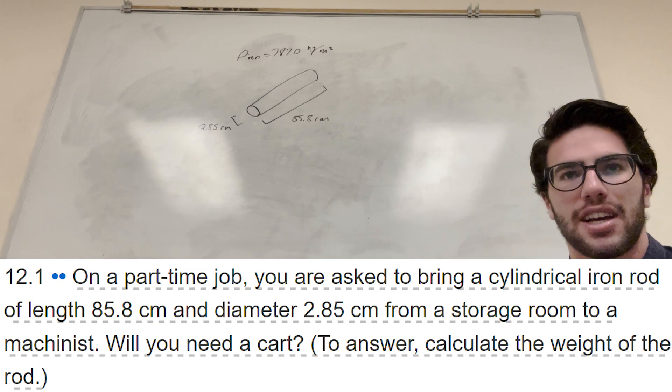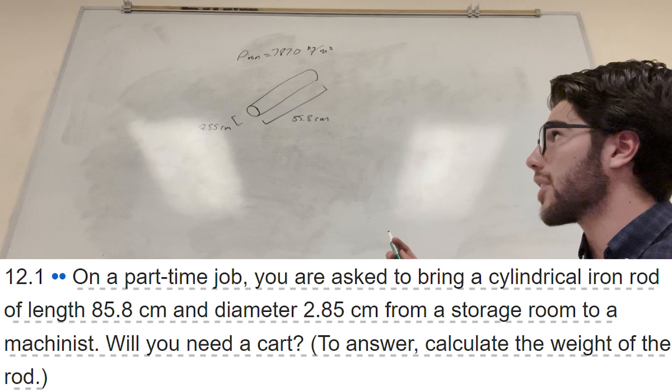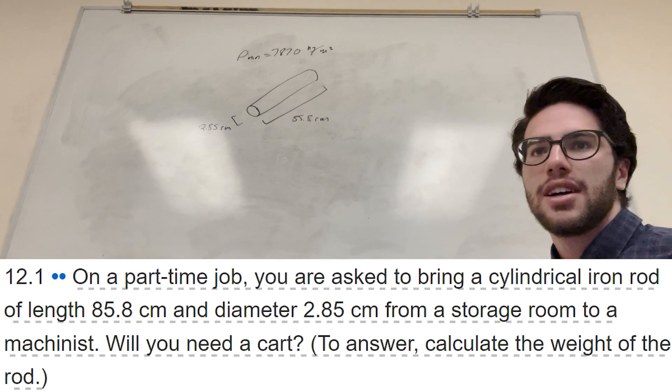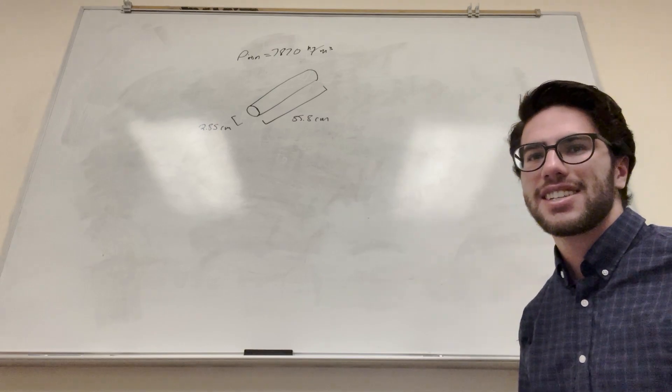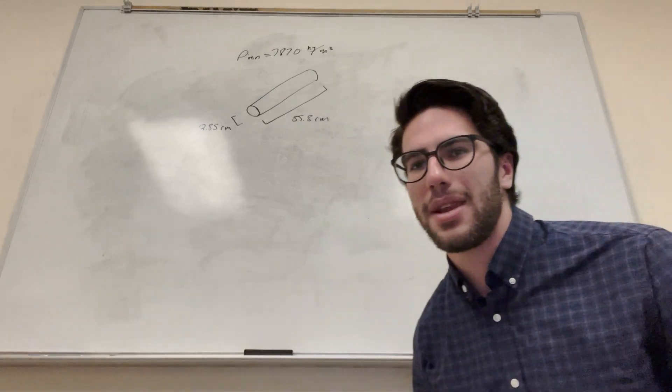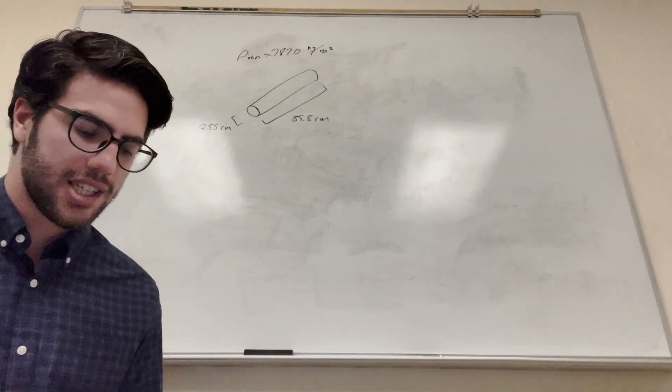So this problem is pretty simple. It's asking, on a part-time job you bring a cylindrical iron rod—so it's iron, so I put the density of iron up there—and it gives you the dimensions and asks if you're gonna need a cart to carry it. So basically we're trying to find the mass of it and see how heavy it is. So let's do that.